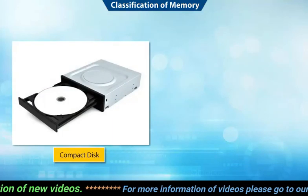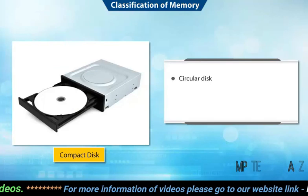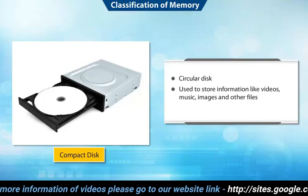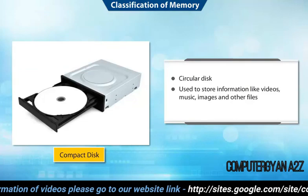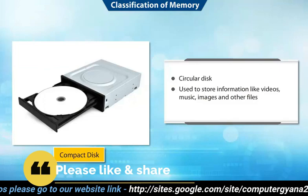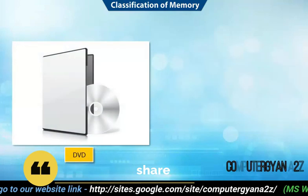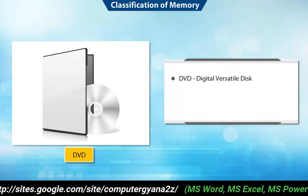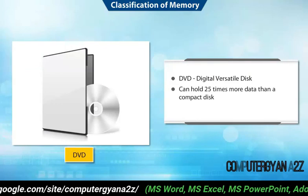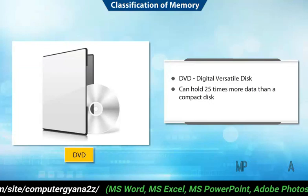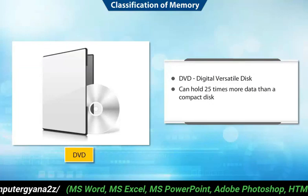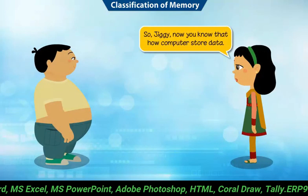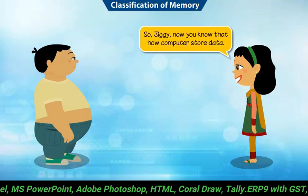We now use compact disks. The compact disk is a circular disk used to store a wide variety of information, like videos, music, images, and many other files. DVD is similar to a compact disk. DVD stands for Digital Versatile Disk. It can hold 25 times more data than a compact disk. So Jiggy, now you know how a computer stores data.